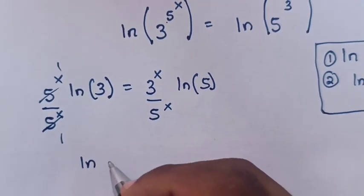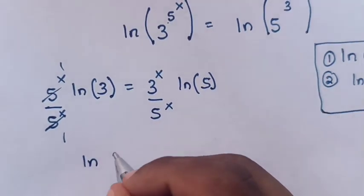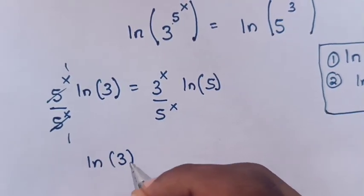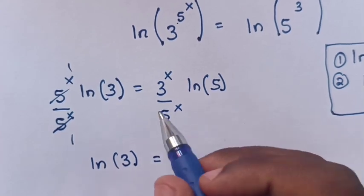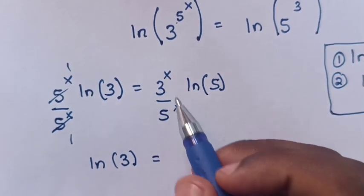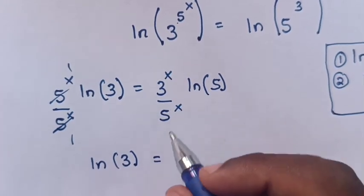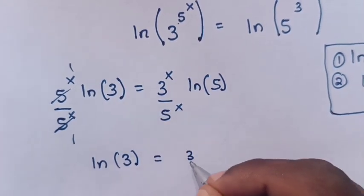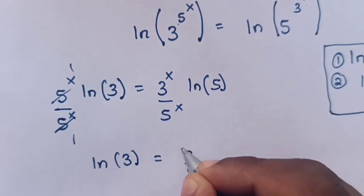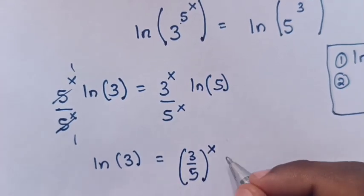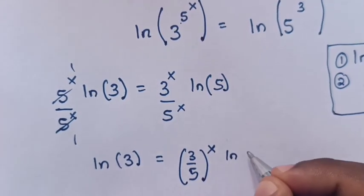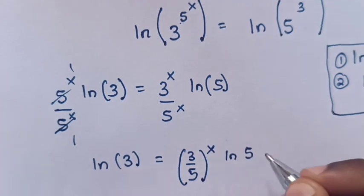So our equation will be log(3) is equal to — because there are common powers of x — it will be (3/5)^x · log(5).